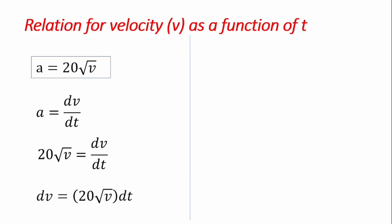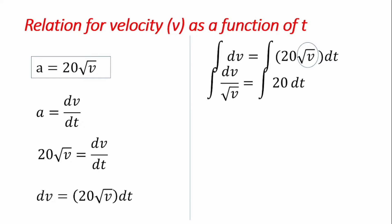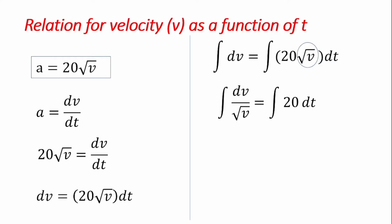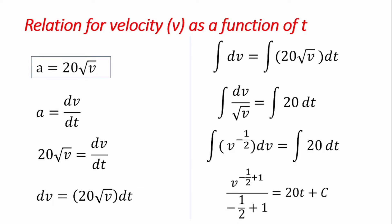Multiplying both sides by dt and rearranging, we get dv equals 20 root v dt. Dividing both sides so that all v terms are on one side, we obtain dv divided by root v equals the integral of 20 dt. This is the same as v raised to the power minus one-half times dv equals 20 dt. Integrating both sides, and applying the power rule on the left, we get the integrated form, while the right-hand side gives 20t plus a constant of integration.